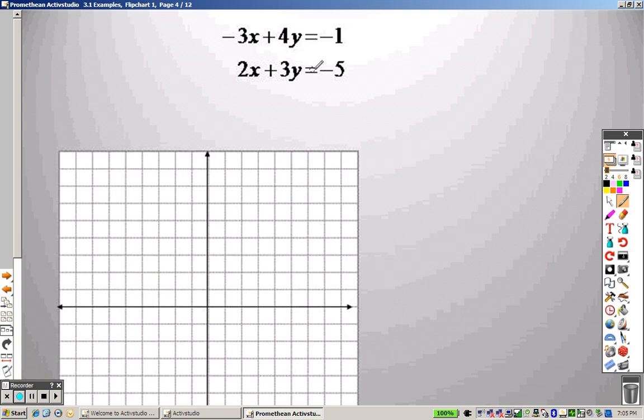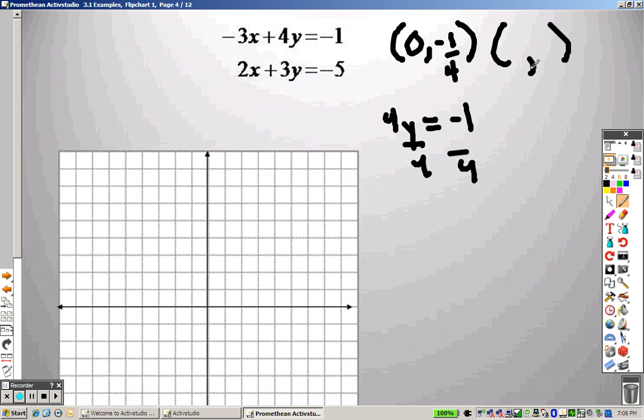For this one, we could try to solve for y, but if I divide by 4, I'm going to get fractions. So we're going to use a different method. I'm going to plug in 0 for x and get an answer. If I plug in 0 for x, I divide both sides by 4, and I get negative 1/4. Then I plug in 0 for y. That's like saying I have negative 3x equals negative 1. So I divide both sides by negative 3, and I get 1/3.